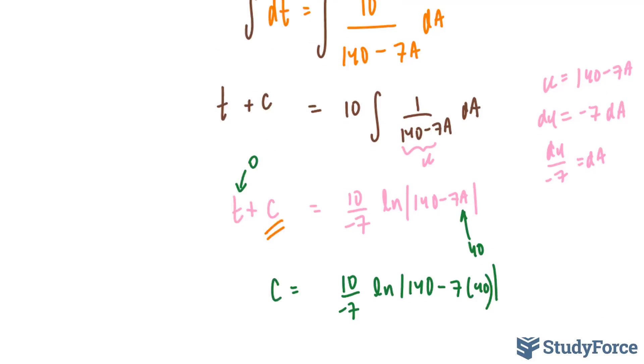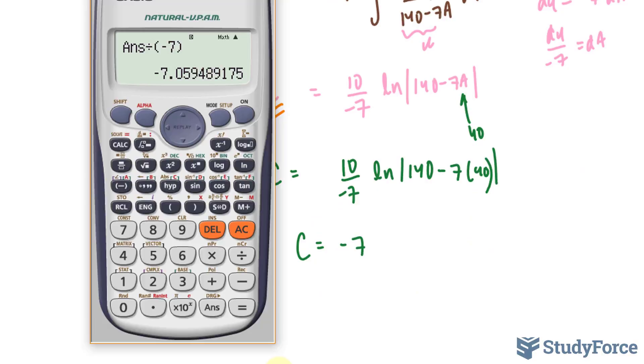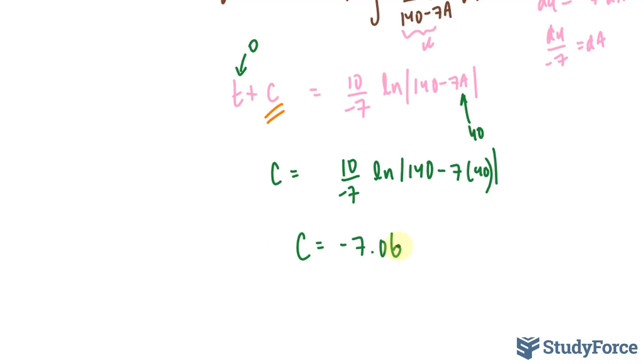That gives me a c value of negative 7.06. I'll substitute this value into c, where I have t minus 7.06 is equal to 10 over negative 7, ln of 140 minus 7A.